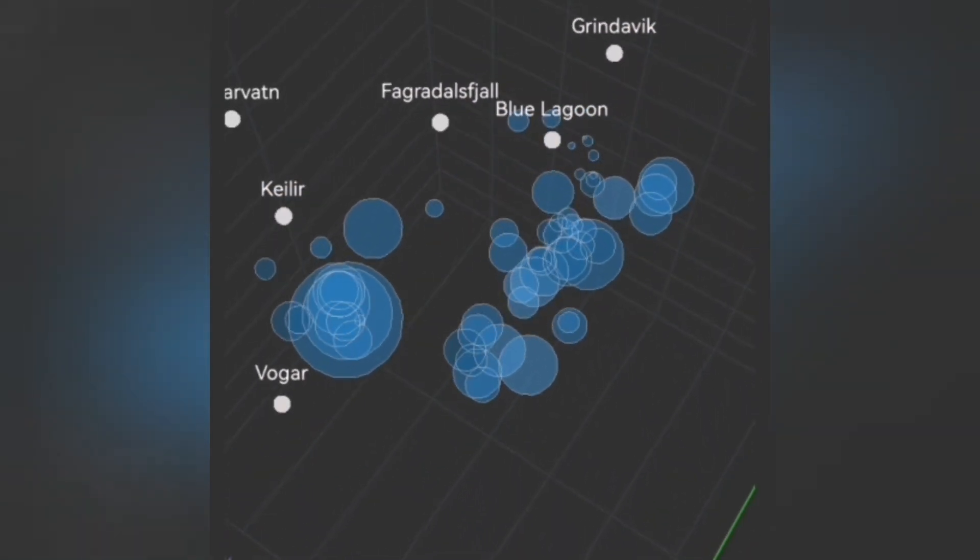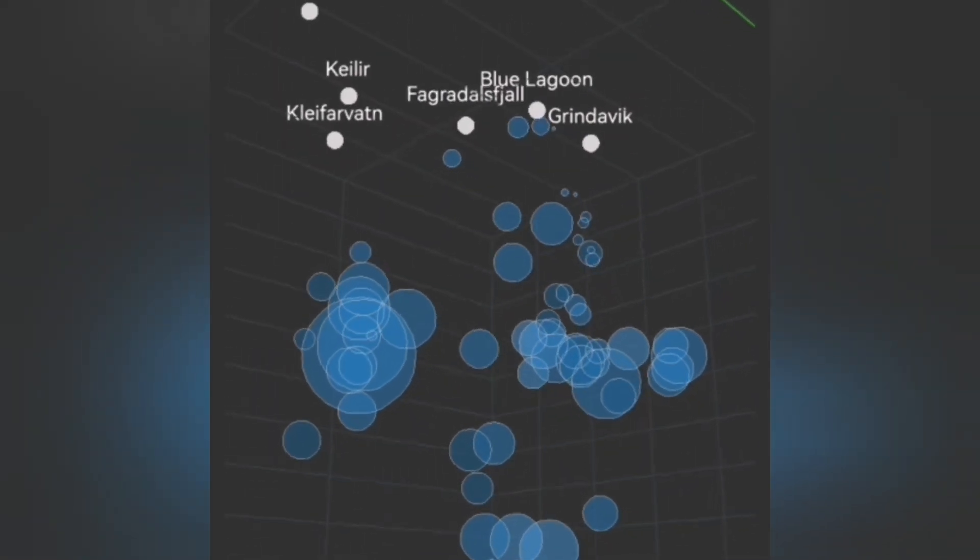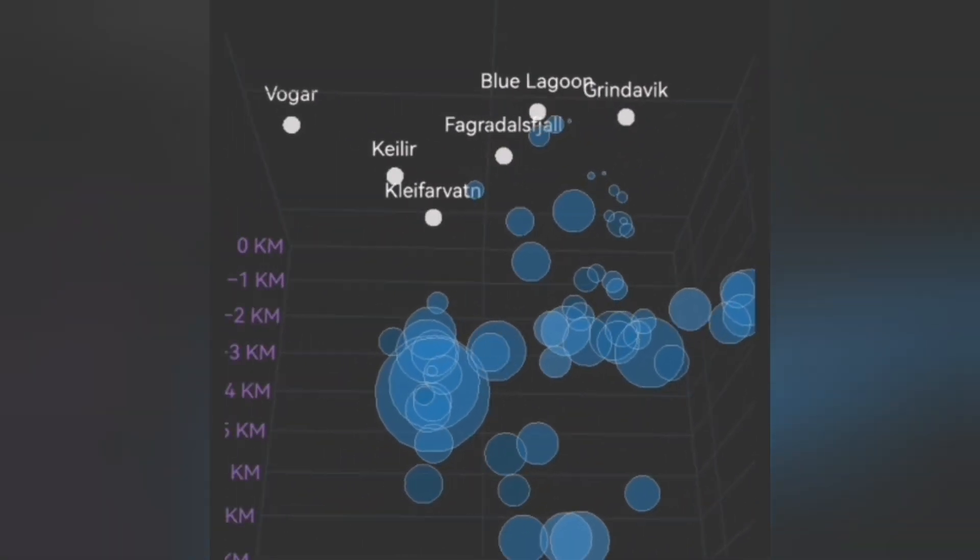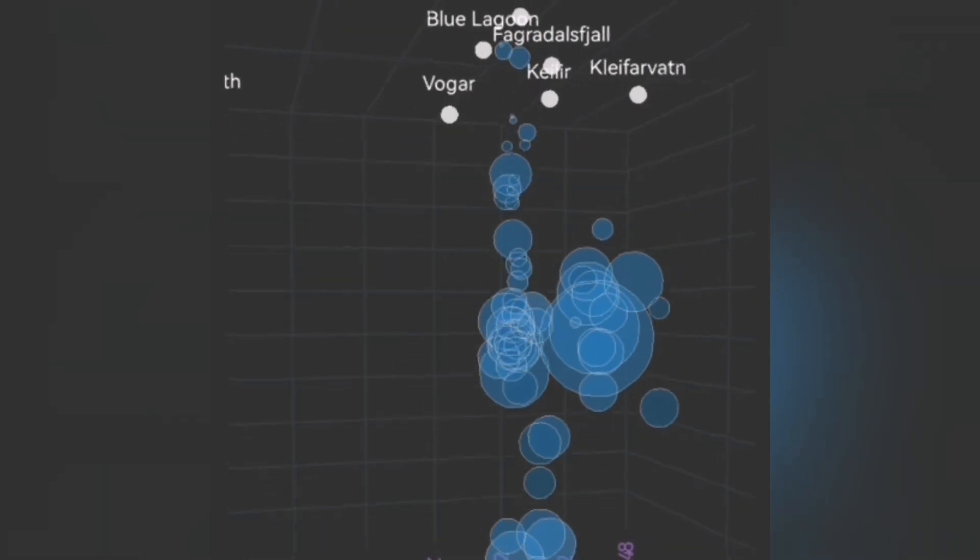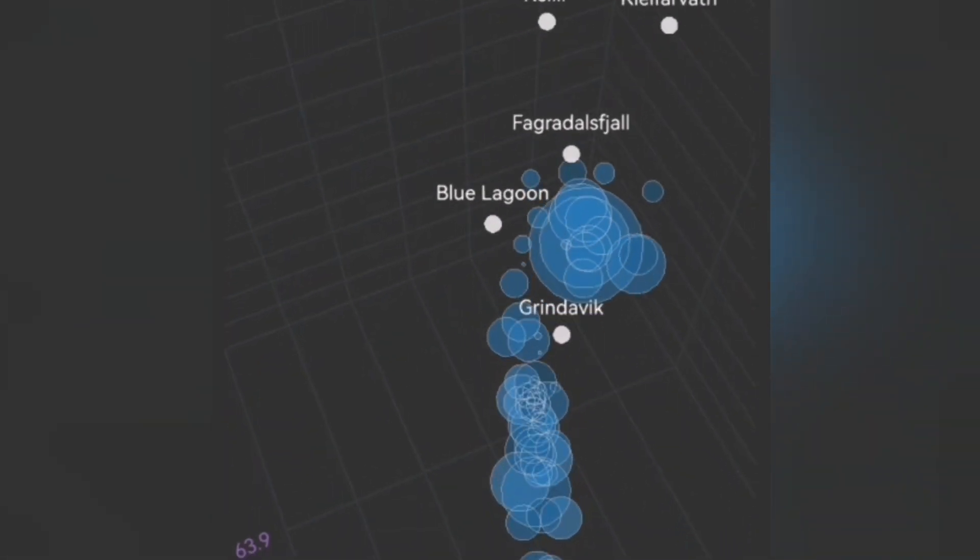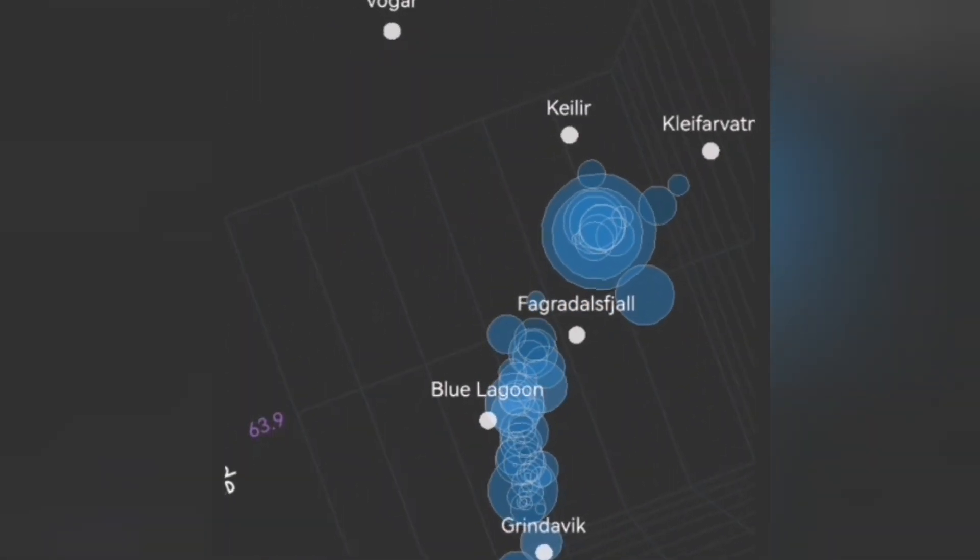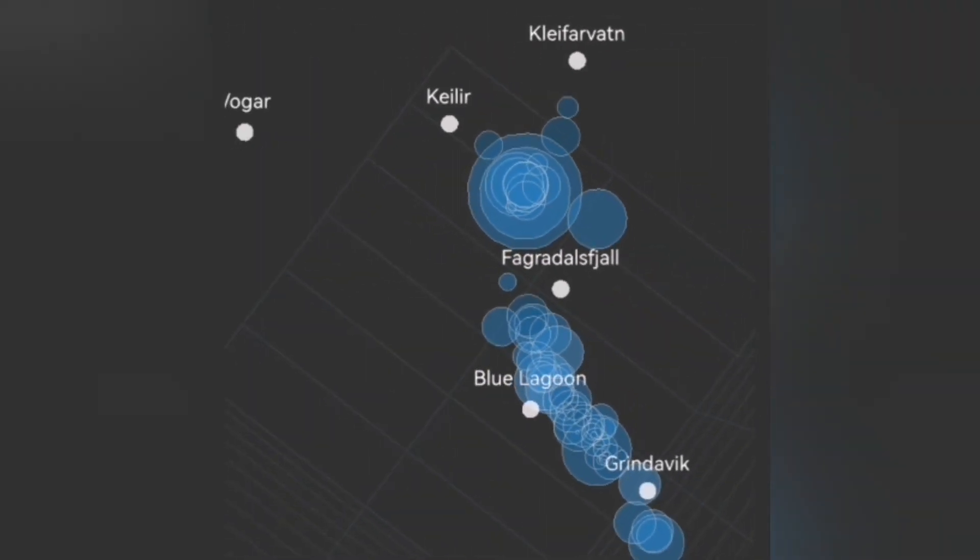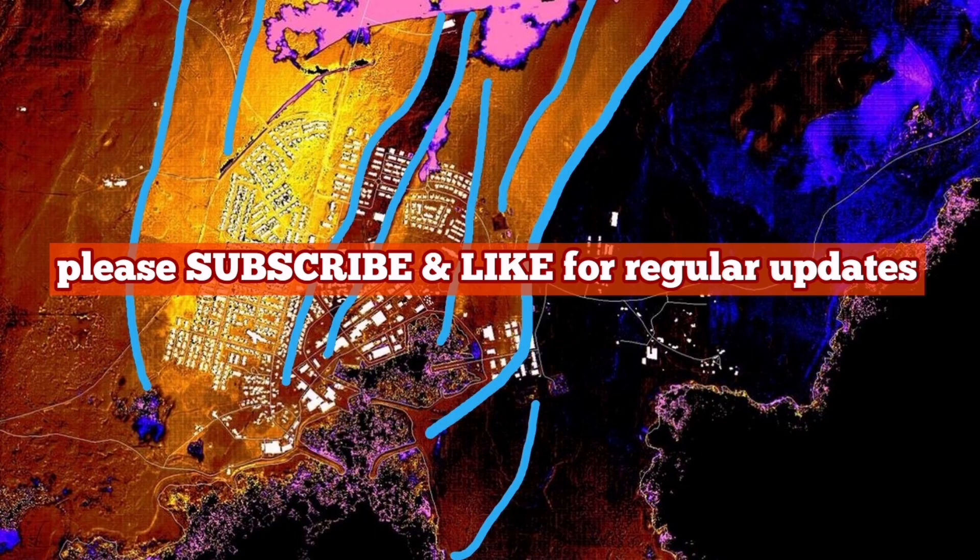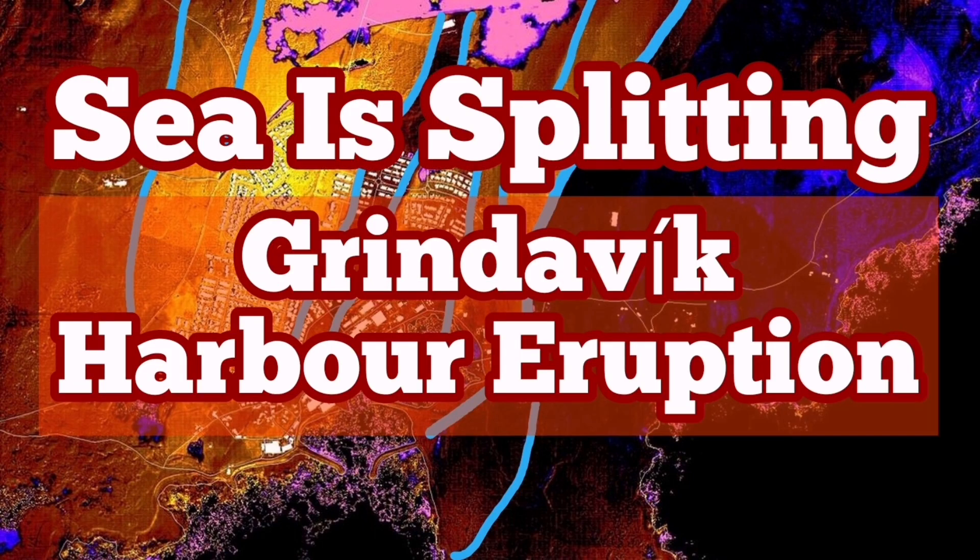I'll show you here. Kleifarvatn is related to that Krísuvík volcanic system. And the Grindavík, you can see that near the Svartsengi, we don't have Sundhnúkar, we have something. And now, off the coast of the Grindavík, in the ocean, we see the rising of the earthquakes. Means the magma is rising with it.